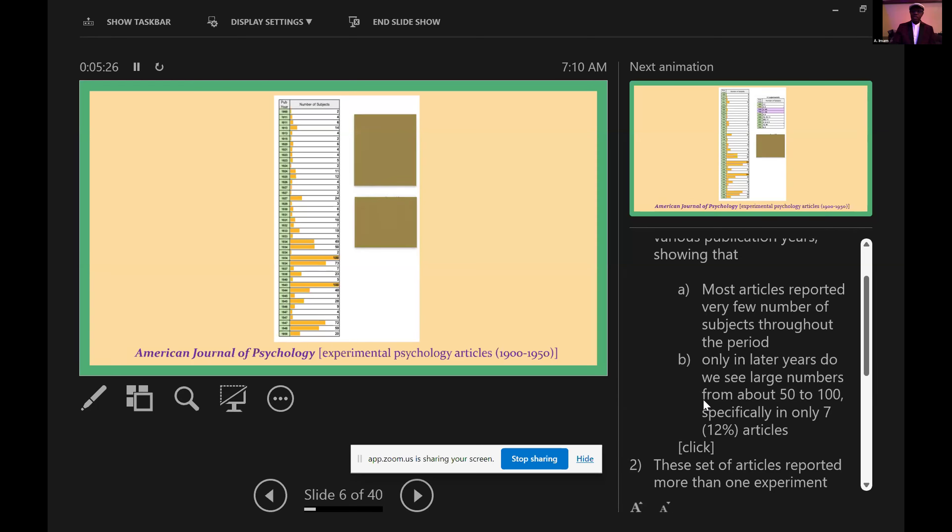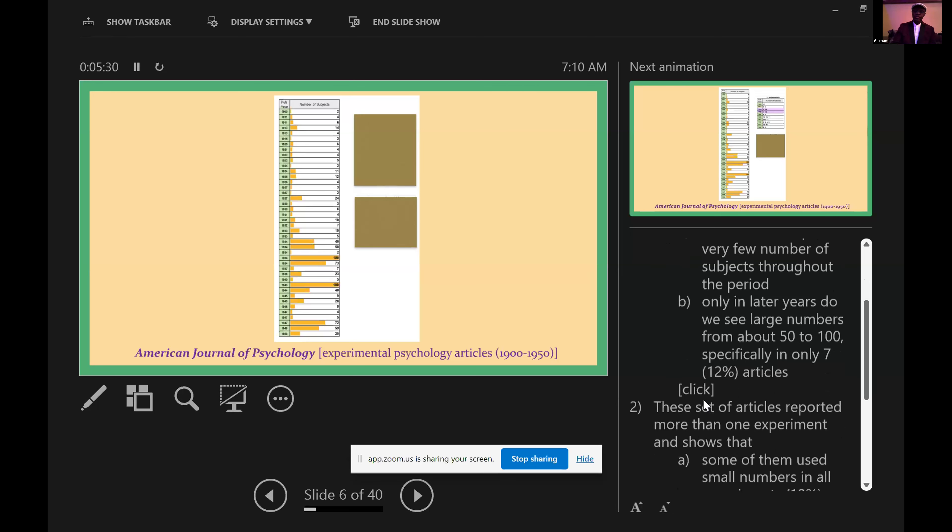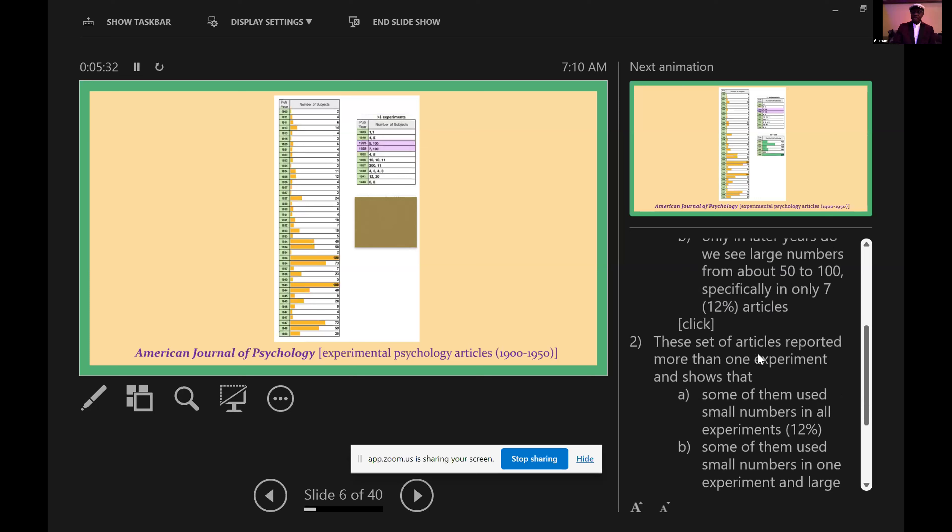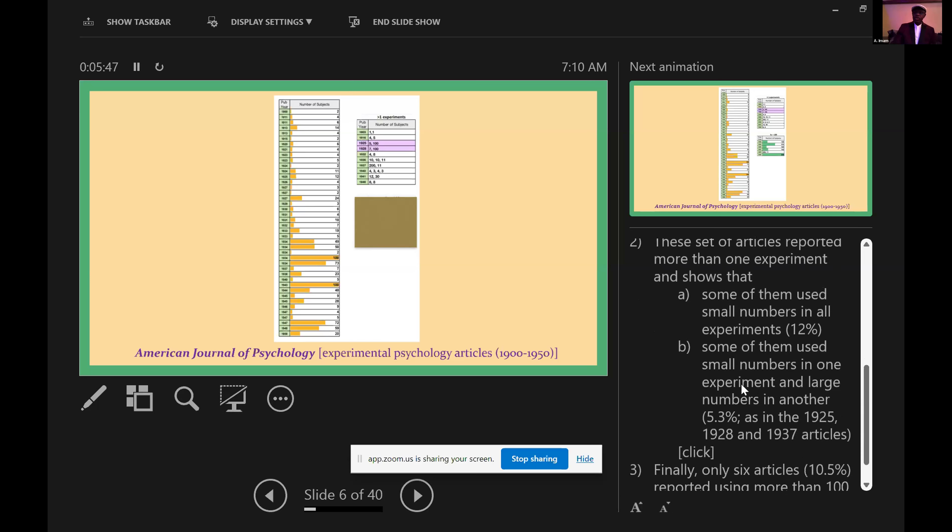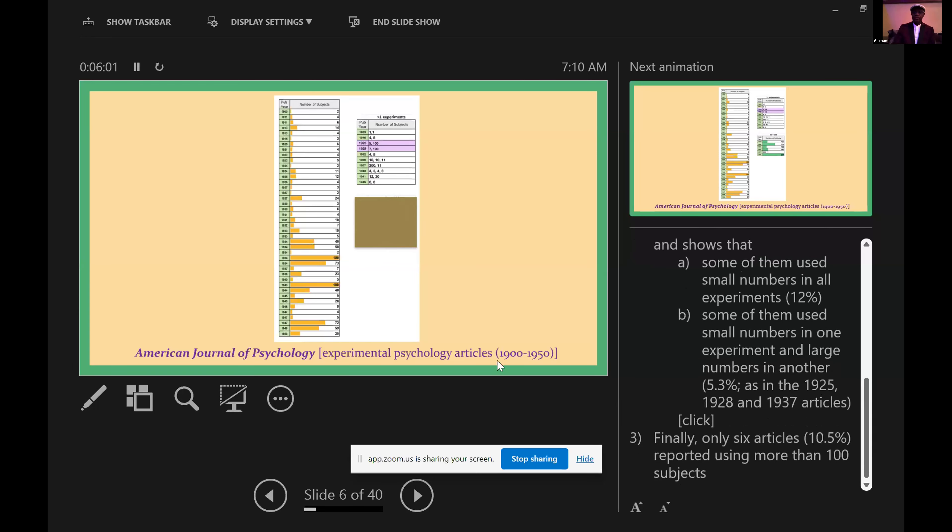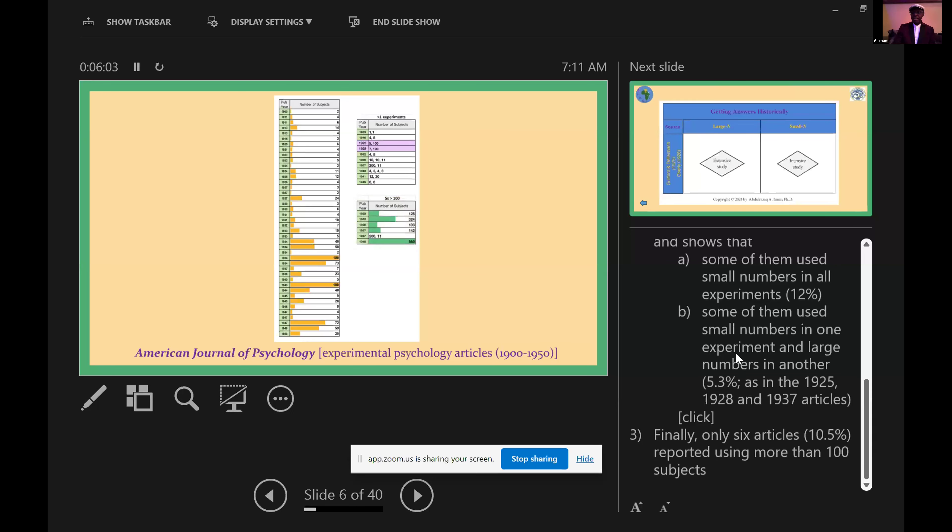Specifically, only seven of the articles, about 12 percent of this set of articles, reported more than one experiment, showing that some of them used small numbers in all their experiments, and some used both small-N in one experiment and large-N in another experiment as we see in 1925, 1928 and the 1937 articles. Finally we see that only six articles, 10.5 percent, reported using more than 100 subjects.